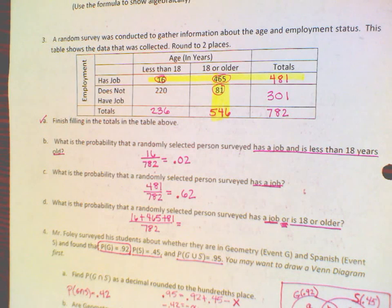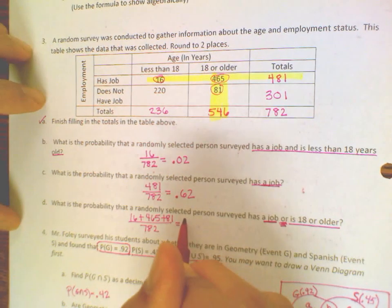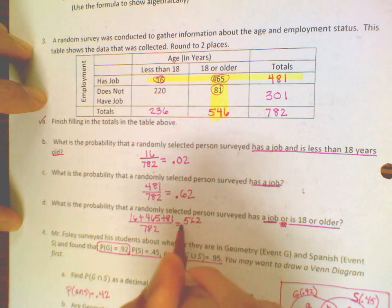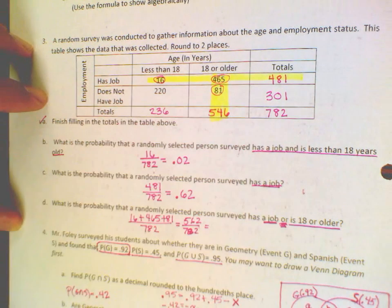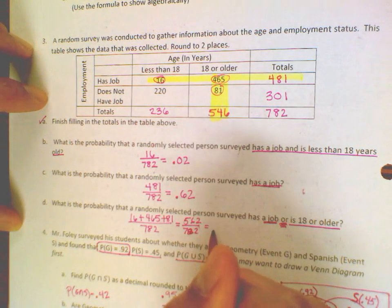Okay, 16 plus 465 plus 81 is 562. 562 divided by 782 will be 0.72.